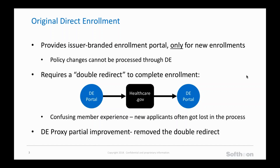In late 2017, CMS introduced a partial improvement to Original Direct Enrollment called DE Proxy. What DE Proxy did was remove that double redirect. It didn't improve a lot of the basic member confusion, but at least it removed the double redirect. The limitation with DE Proxy, however, is that it's just a short-term solution and it will actually be disabled in September of 2018.